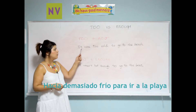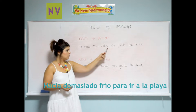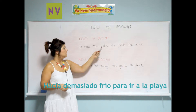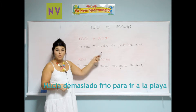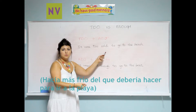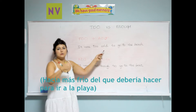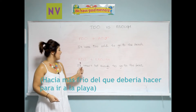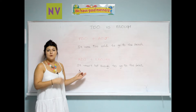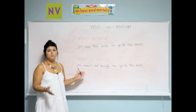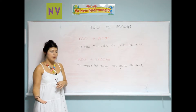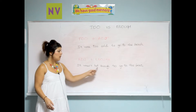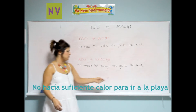For example: 'It was too cold to go to the beach.' It means that it was much colder than it should be to go to the beach. Here is the same example expressed in a different way: 'It wasn't hot enough to go to the beach.'